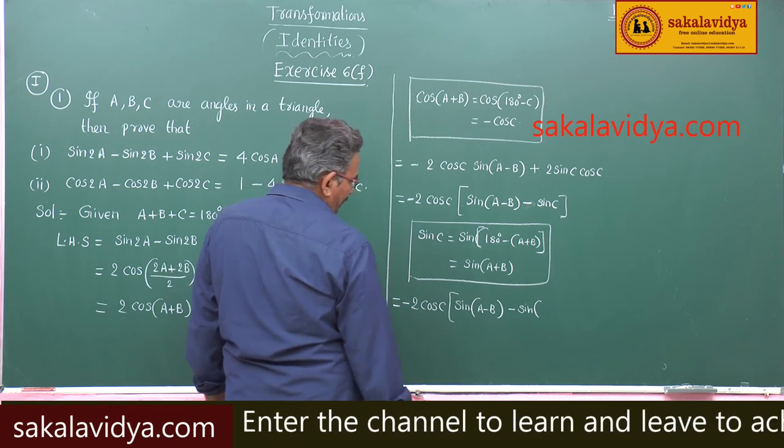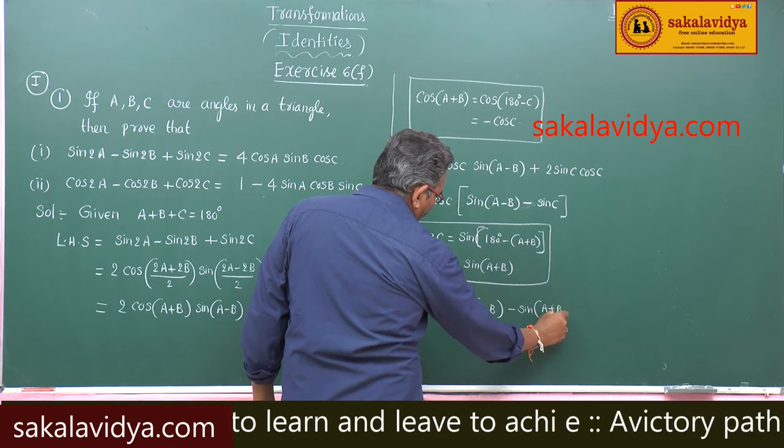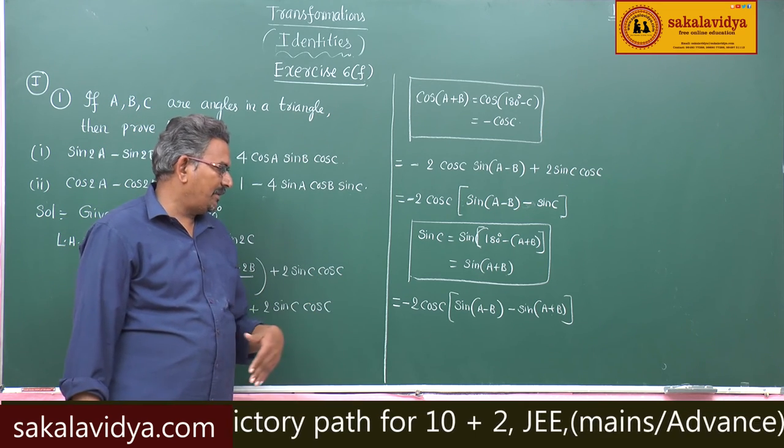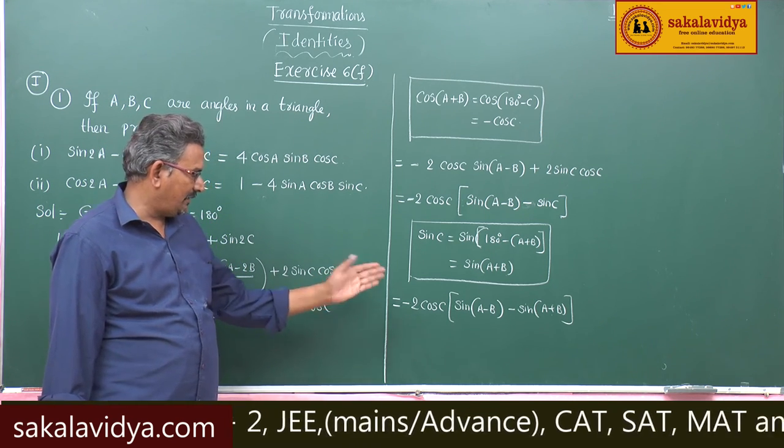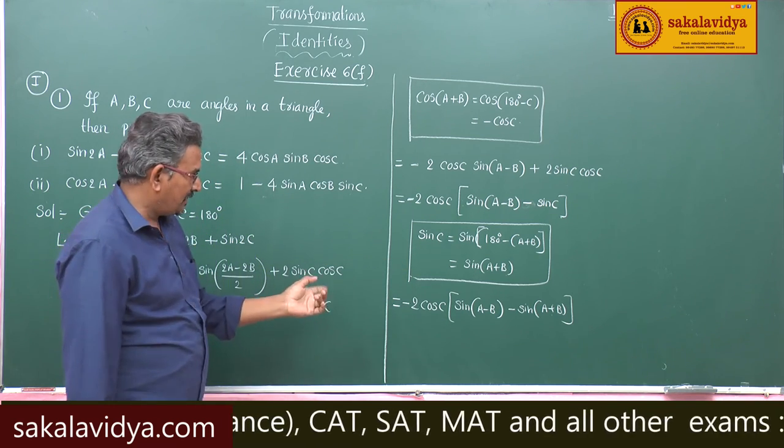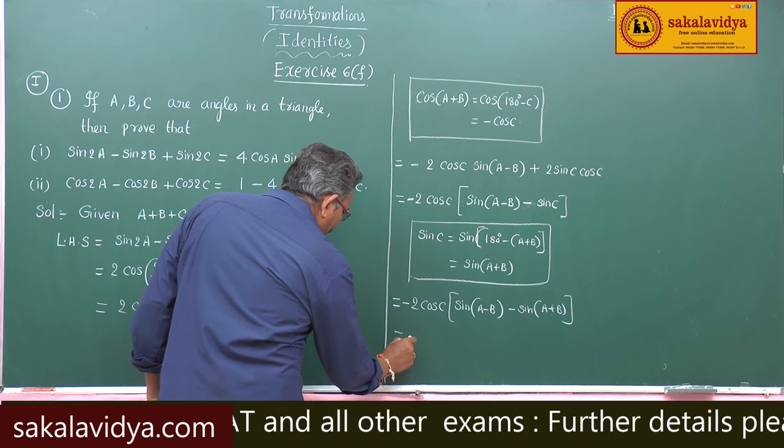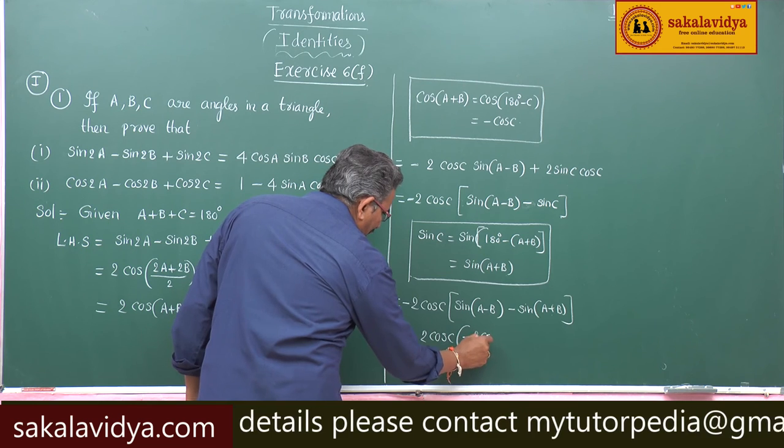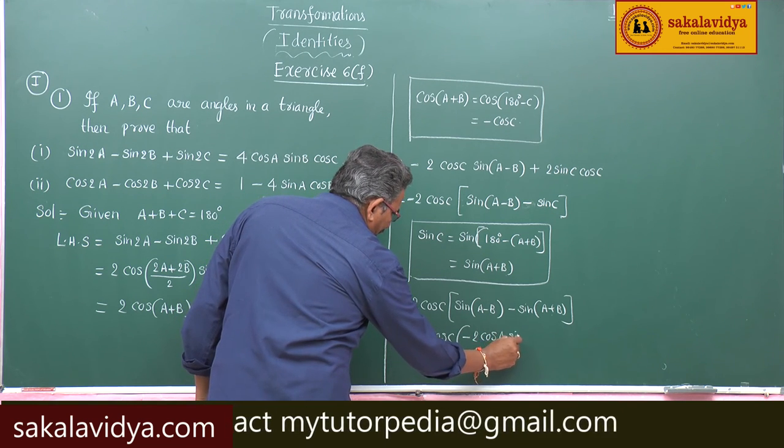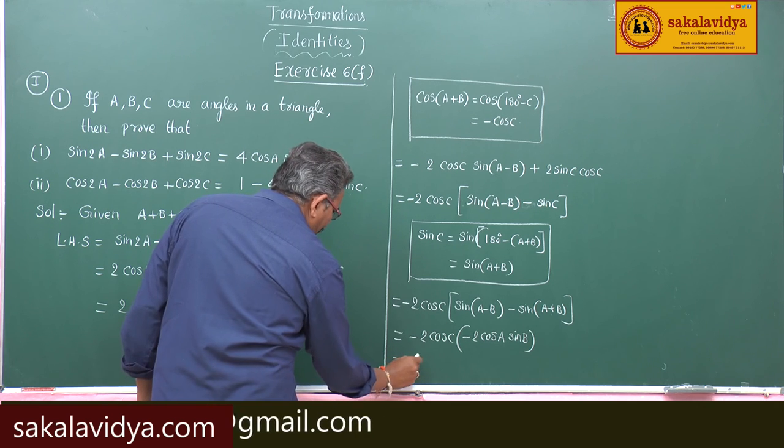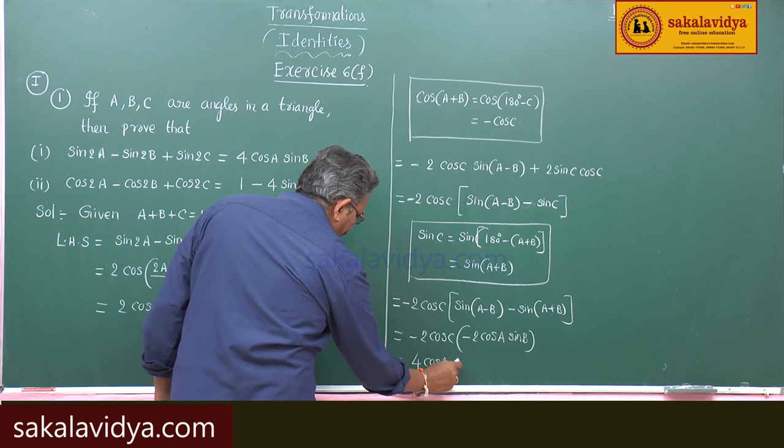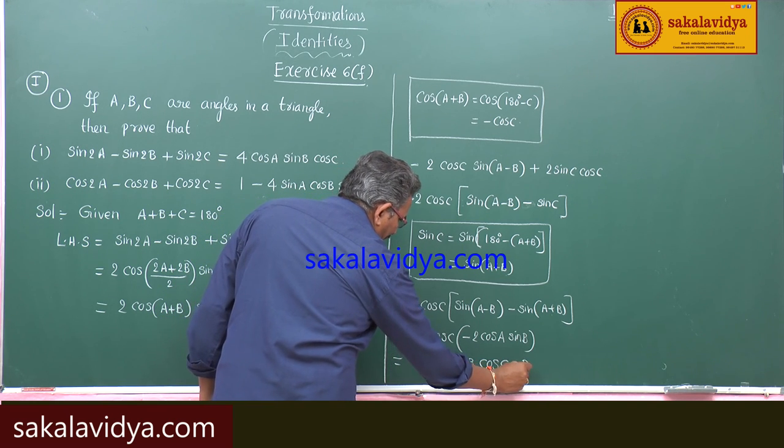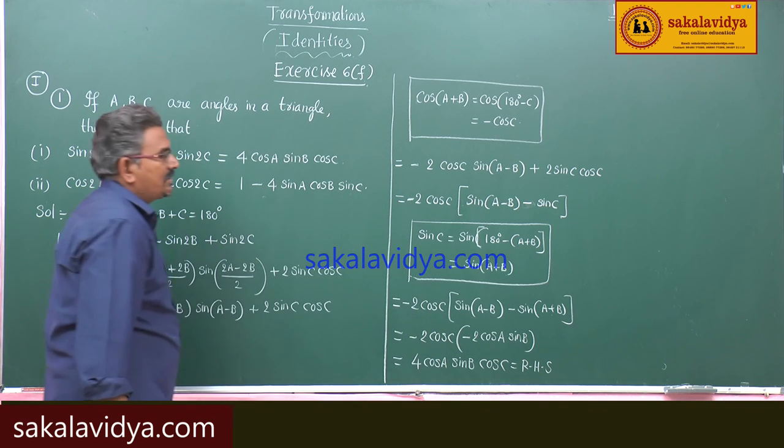Sin of A plus B minus sin of A minus B is 2 cos A sin B, but sin of A minus B minus sin of A plus B is minus 2 cos A sin B. So this is equal to minus 2 cos C into minus 2 cos A sin B. Now this is 4 cos A sin B cos C, this is RHS. Now let us move to the next problem.